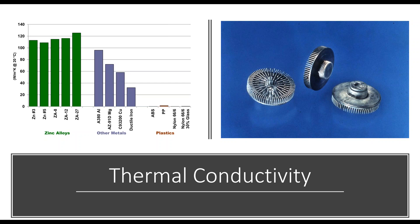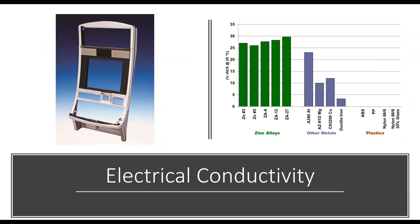Electrical conductivity is important for electronic applications that require RF shielding. Alloys with higher electrical conductivity produce components with better shielding capability. Zinc die casting alloys have higher electrical conductivity than most of the competing cast products and all plastics.